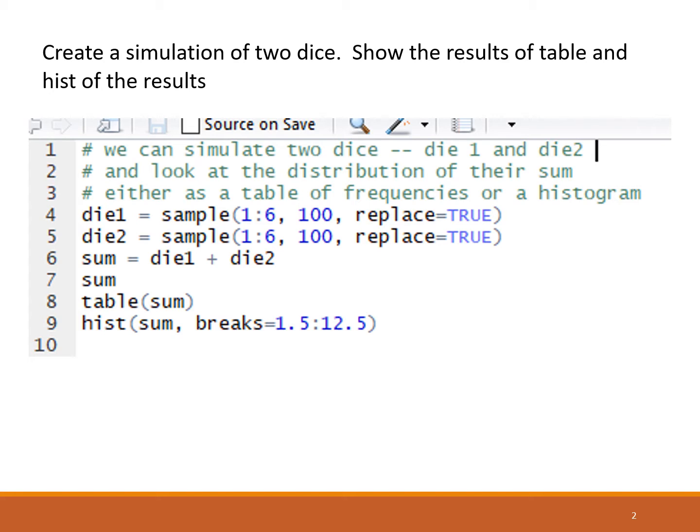Line seven just has sum, so the results will be spit out into the console. Table is a way to quickly get to the frequencies. It'll tell us how many times we rolled a 2. The possible values go from 2 to 12. The smallest value of the sum, if we rolled two 1s, was a 2. The highest, if we rolled two 6s, is a 12.